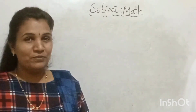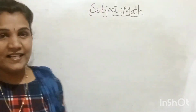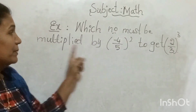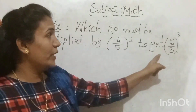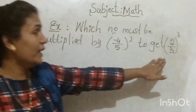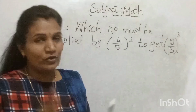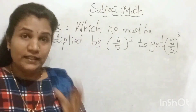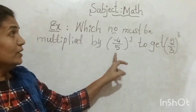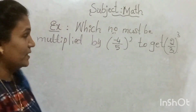Heartily welcome all of you to my YouTube channel Inspiring Math and Science. Now, here is an example I'm going to explain. Which number must be multiplied by (-4/5)² to get (2/3)³? We need to find the number that, when multiplied by (-4/5)², gives (2/3)³. Let us take the unknown number as x.